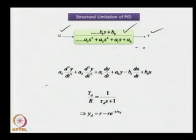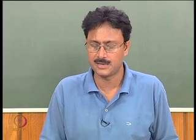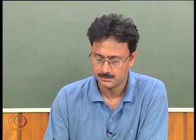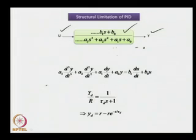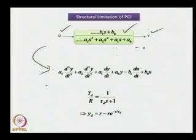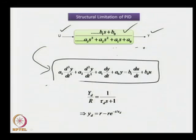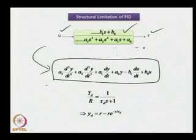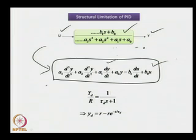Let us assume we have a third-order process whose dynamics is given by: G(s) = (B_1·S + B_0) / (A_3·S³ + A_2·S² + A_1·S + A_0). Cross-multiplying and taking the inverse Laplace transform gives us the differential equation: A_3·(d³y/dt³) + A_2·(d²y/dt²) + A_1·(dy/dt) + A_0·y = B_1·(du/dt) + B_0·u, which describes the dynamics of the third-order system in the time domain.